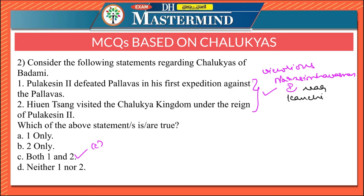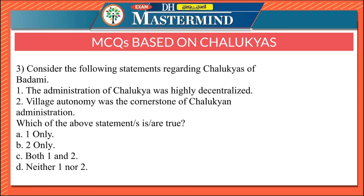Xuanzang visited the Chalukya kingdom under the reign of Pulakeshi 2. This is one of the most important events in the rule of Pulakeshi 2 — please remember these points.